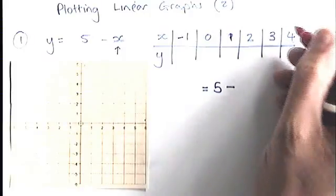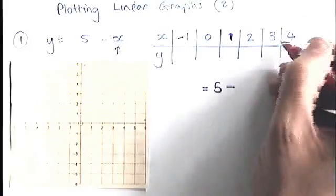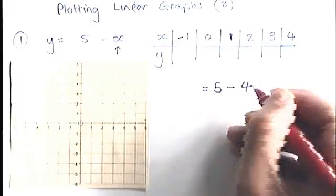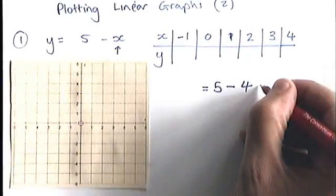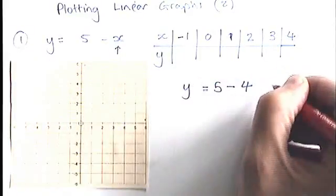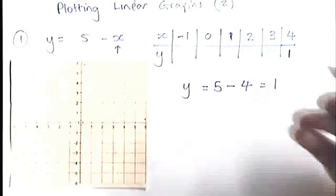If I start, I normally start from the positive numbers because I can get the pattern. If I start with this value of x, I'm going to be doing 5 minus 4. So the y value in that case is going to be 5 take away 4, which is 1, like that.